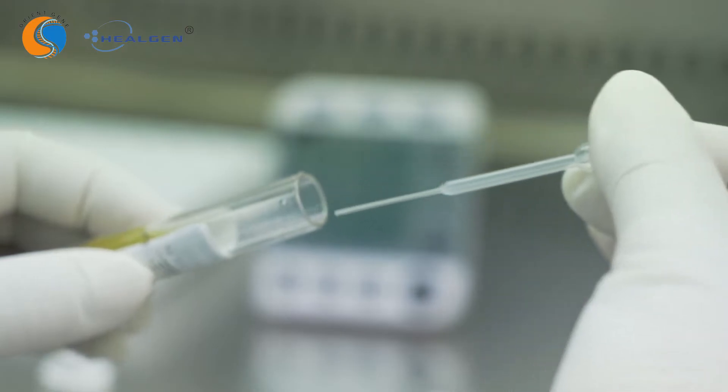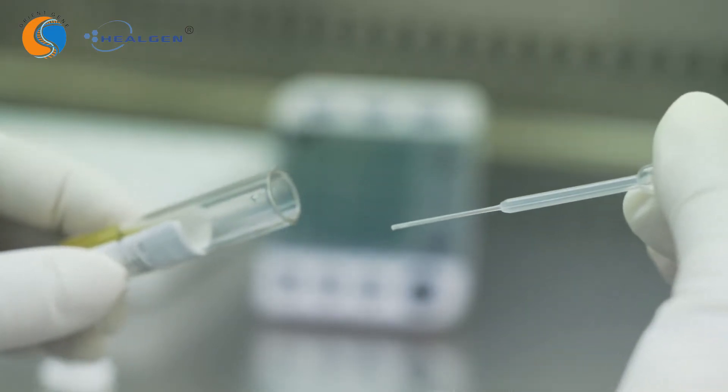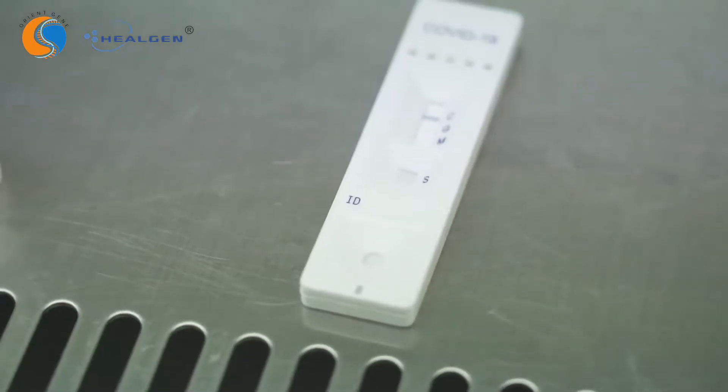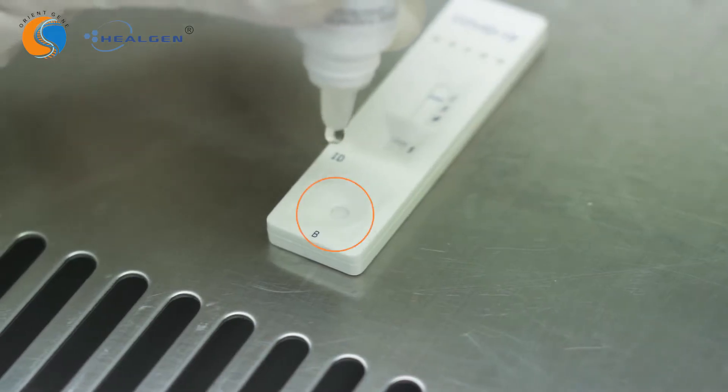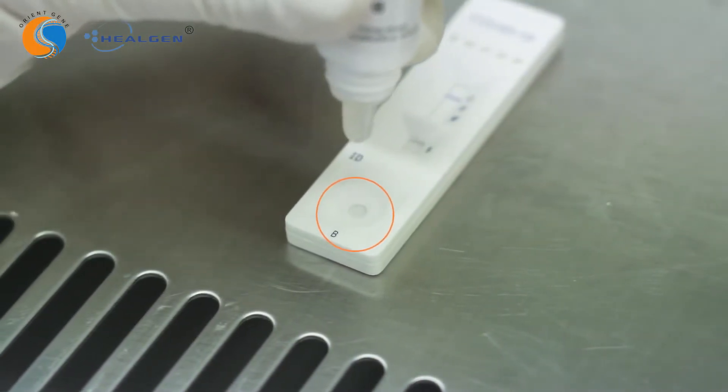When using a disposable dropper for serum or plasma specimen, draw a specimen until it reaches the specimen line. Hold the dropper vertically and transfer one drop of drawn specimen into the sample well, labeled as S, on the test cassette. Then add two drops of buffer to the buffer well, labeled as B, immediately after.